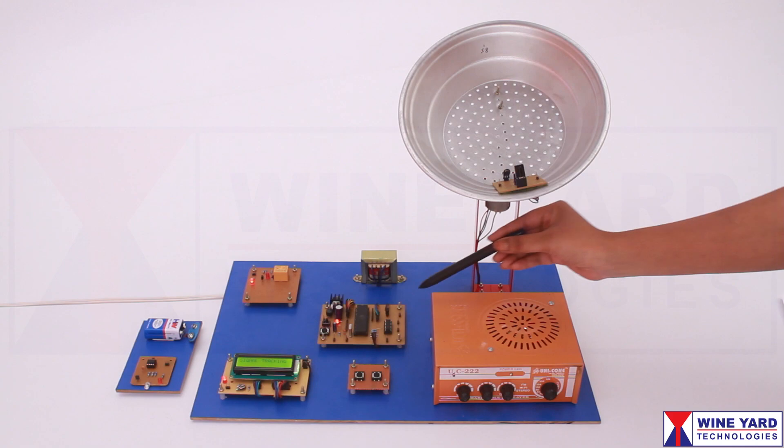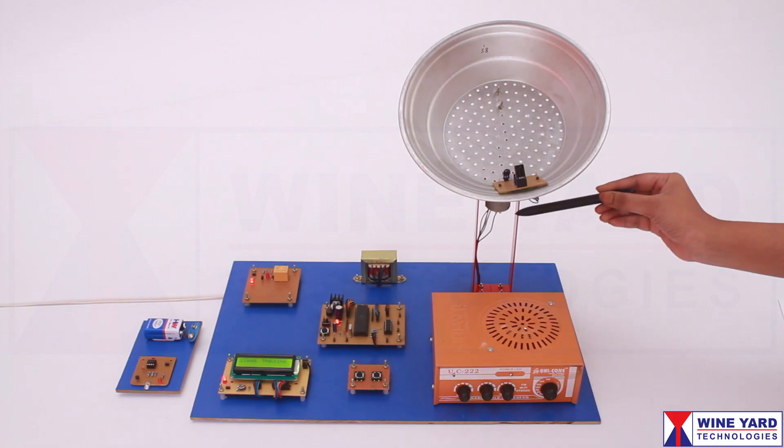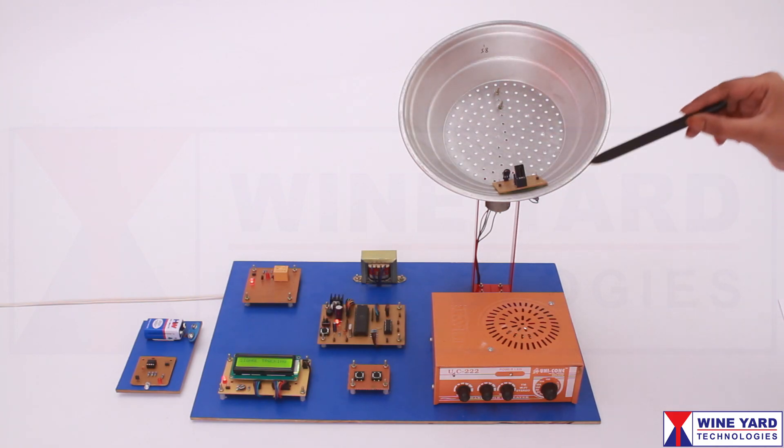This is L293D H-Bridge IC to rotate the gear DC motor in clockwise and counter-clockwise directions.